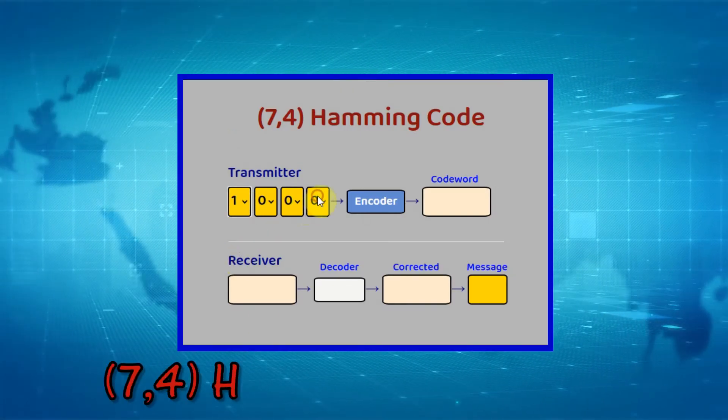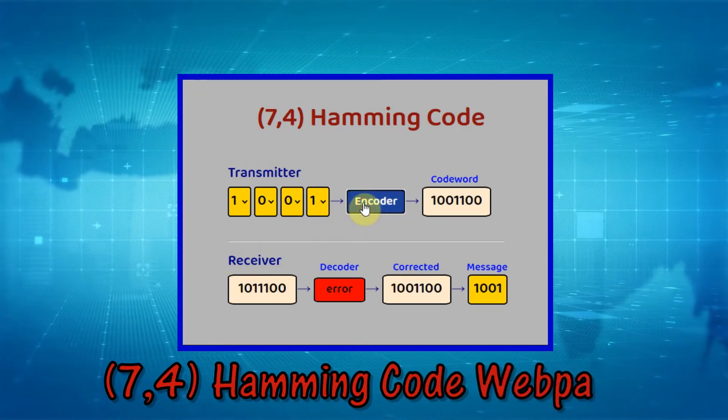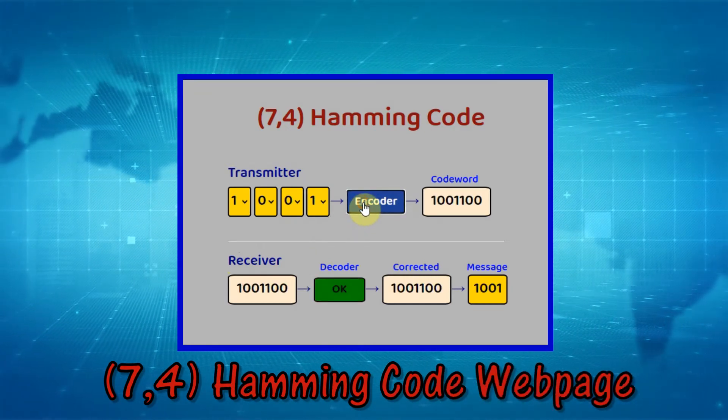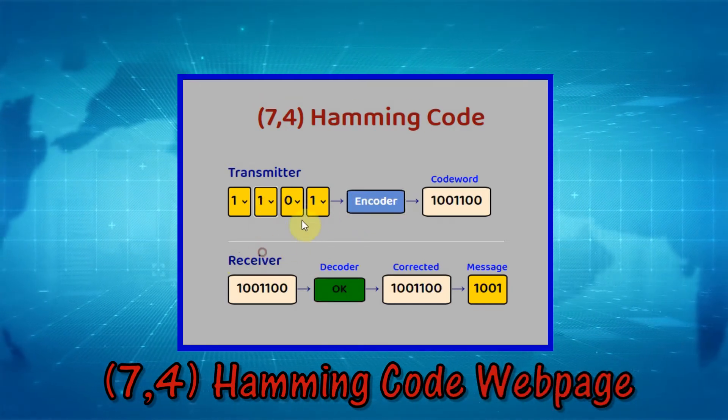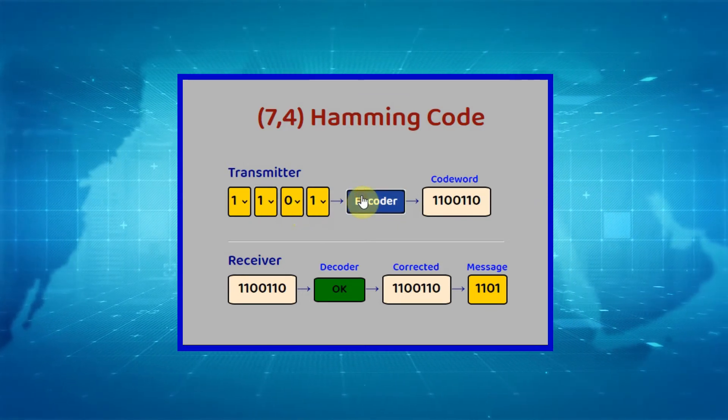In this tutorial, an interactive web page will be presented that demonstrates the 7-4 Hamming code, which is used in error-correcting communication systems.